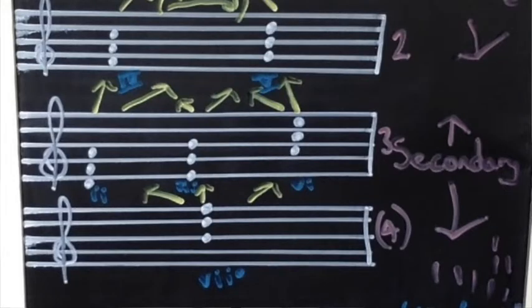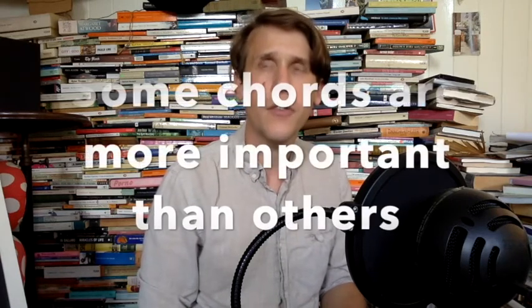Our secondary triads all want to go back to the tonic as well. So in a usual harmonic pattern, from level three — the secondary triads, the minor chords — we would go to level two (four or five), and then back to tonic one. Often there are complicated ways of doing this, and a lot of compositional art is about combining different approaches. But this sense of chord hierarchy is really useful to think about.